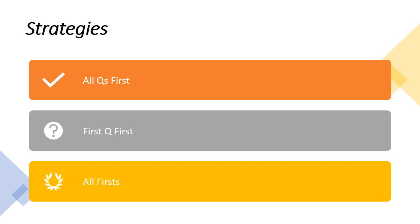Let's start with the 'All Questions First' strategy. If you have a reading text, first read all the questions before reading the text, then go to the text. Why? Because now you have an idea of the questions and the information you are looking for, so your mind is oriented. If you read the text first and then go back to the questions, you'll keep going back and forth wasting time.